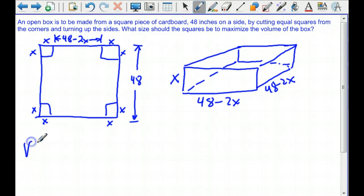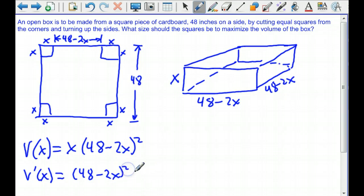So our volume in terms of x is x times 48 minus 2x squared. And that means that our derivative, which we'll get using the product rule, the derivative of x is 1 times 48 minus 2x squared plus x times the derivative of that, which is 2 times 48 minus 2x to the first times the derivative of 48 minus 2x.